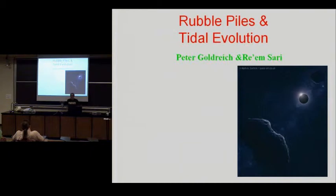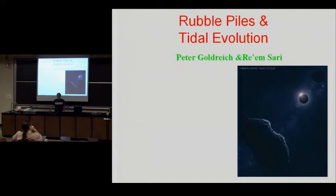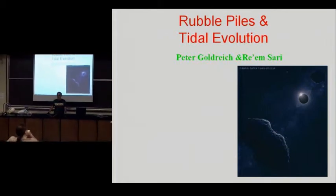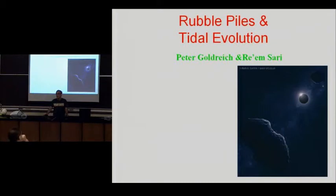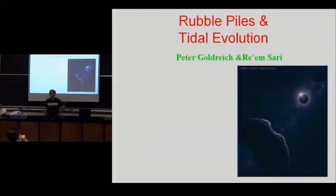This is a small subject actually, but it has an interesting piece of physics or engineering, however you want to look at it. It concerns the behavior of objects — small objects which are made up of elements which are much smaller than they are — and how they respond to mechanical stress. In particular, I'm going to try to explain why the tidal evolution of these small bodies, mainly near-Earth asteroid binaries, is at least 10,000 times faster than would be true for bodies of the same composition that were monoliths — single coherent objects.